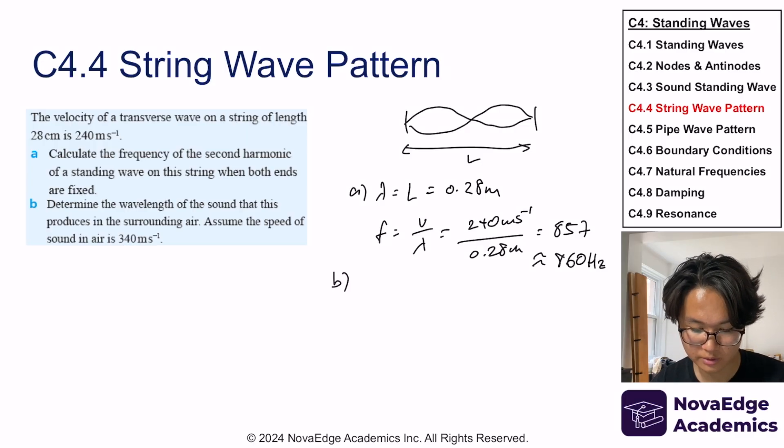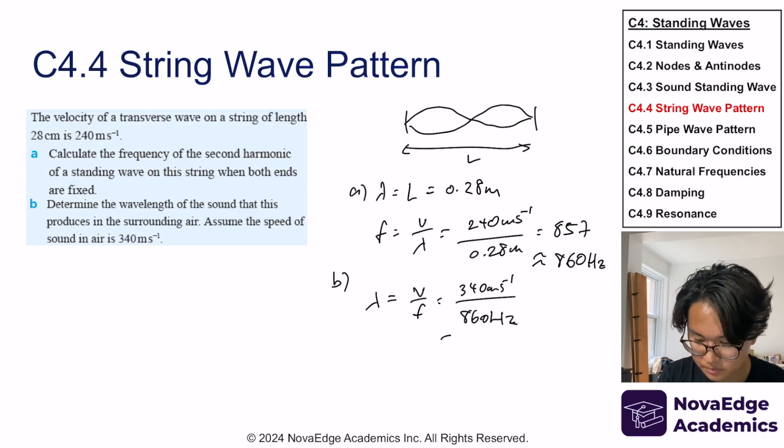Part B, determine the wavelength of the sound that this produces in the surrounding air. Okay, so all of these strings that's vibrating, they produce sound. They produce sound at that frequency. Because it's hitting the air and it's being compressed and released at certain points, at certain intervals. So that frequency doesn't change. But because the velocity at which air propagates is different from velocity of the string, the wavelength changes. So frequency stays the same, wavelength doesn't. So wavelength is velocity over frequency, same frequency, 0.4 meters.